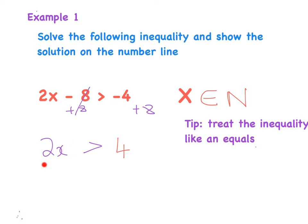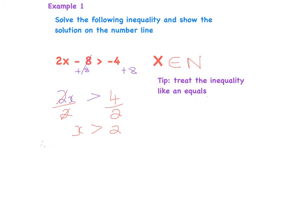I now want to find out what just x is. I have 2x on this side, so in order to balance I'm going to divide by 2 on both sides. The two twos cancel, and I'm told that x is greater than or equal to 4 divided by 2, which is 2.